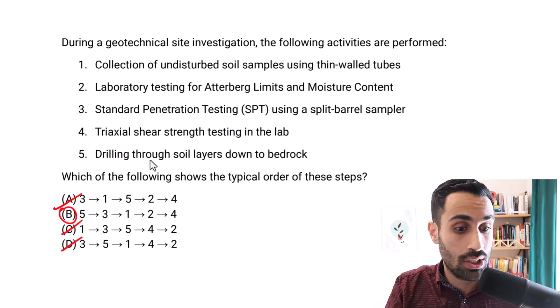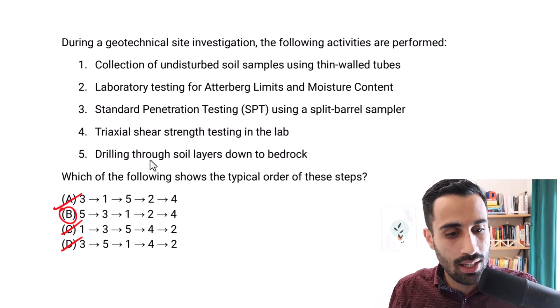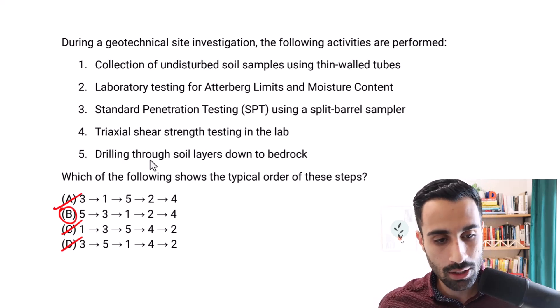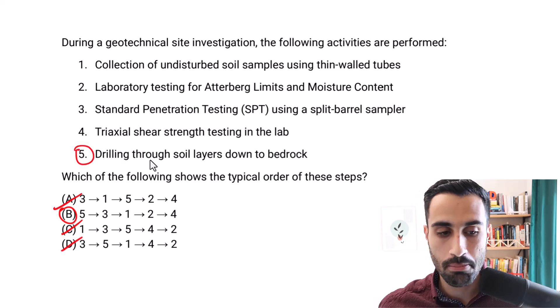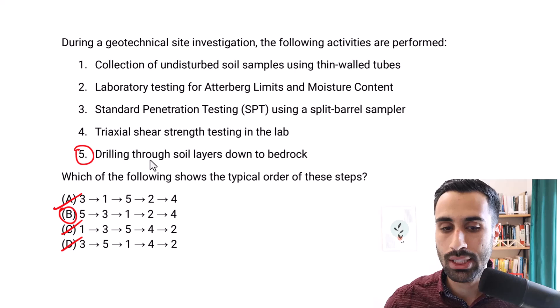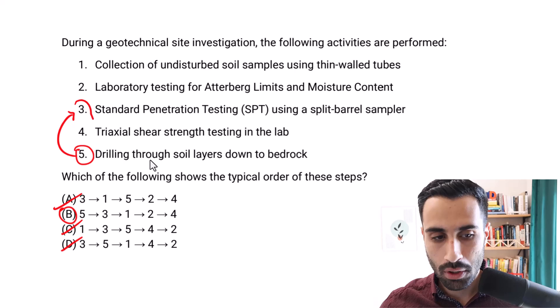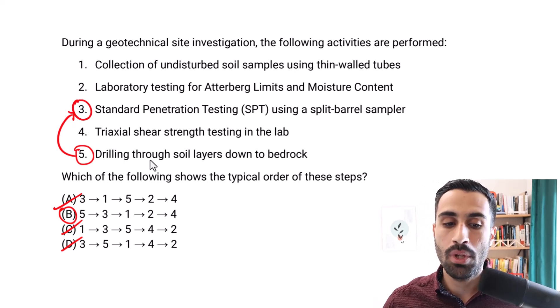They're trying to trick us and make us think it's between A and D. They'll maybe do that on the exam. It is B for this, but let's explain why. So we start with this. That's number one. Then we move on to the standard penetration test, the SPT using the split barrel sampler. So we go to number three.